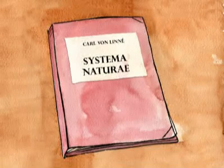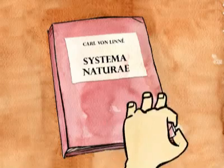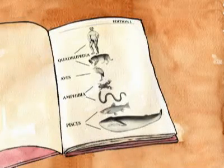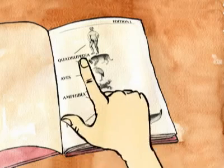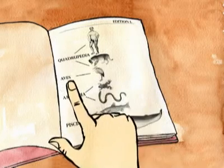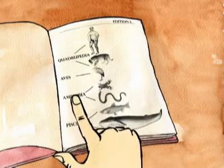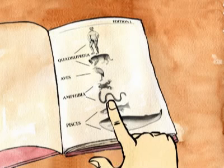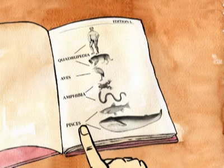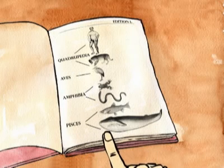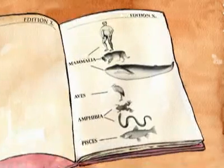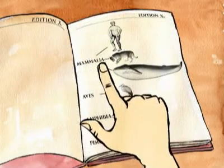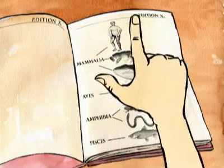An emblematic book proposed a classification system for all species. Animals are classified according to anatomical criteria. Darwin noted that this classification system was not yet coherent. Thus, in the book's first edition, Linné classifies whales within the fish group. But by the 10th edition, whales are classified with the mammals.